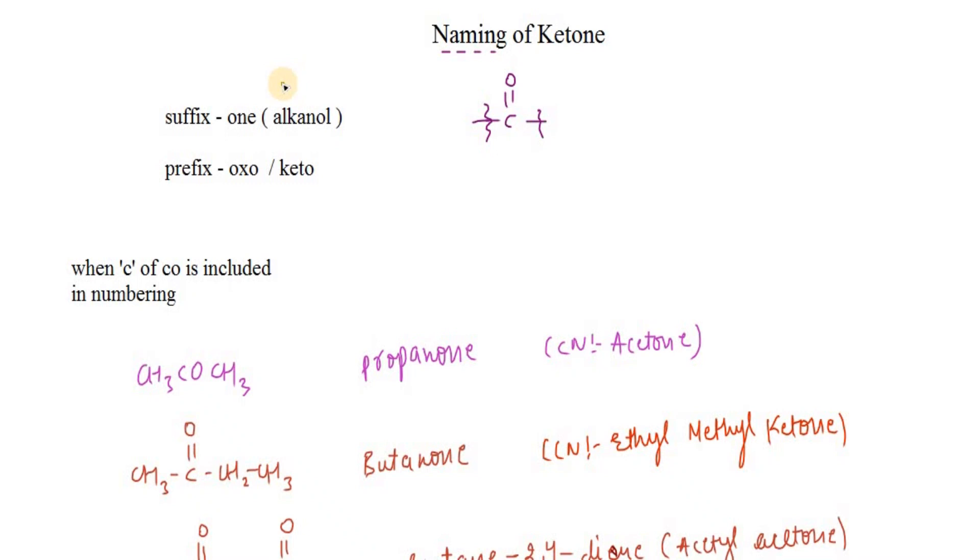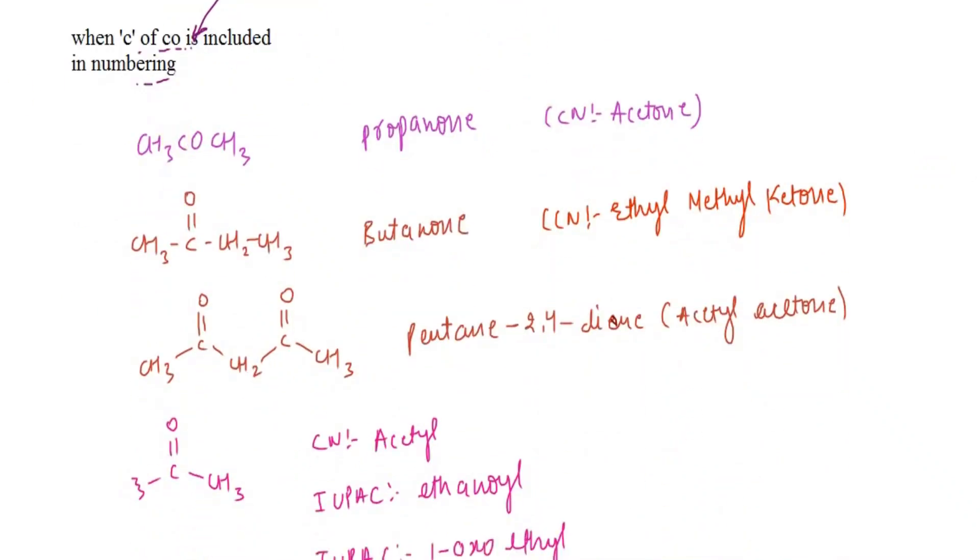In ketones, we use oxo when the carbon of C=O is included in numbering, and we use ketone when they are not included in numbering. As a suffix, we use one, which is alkanone.